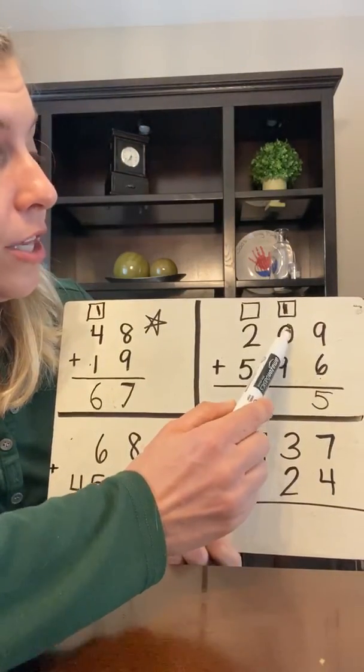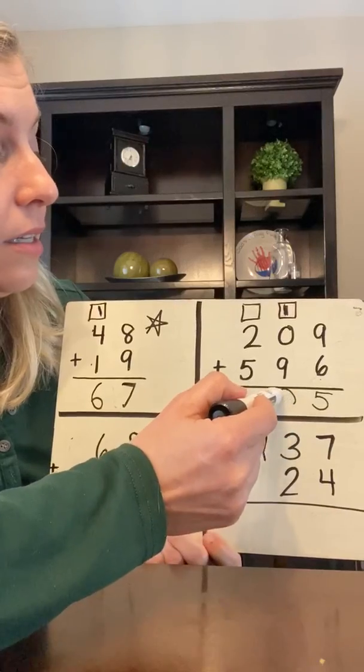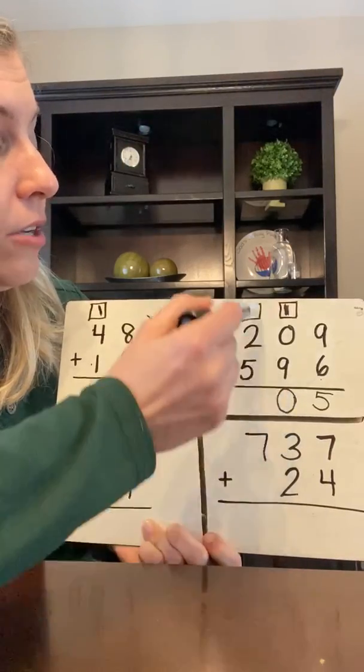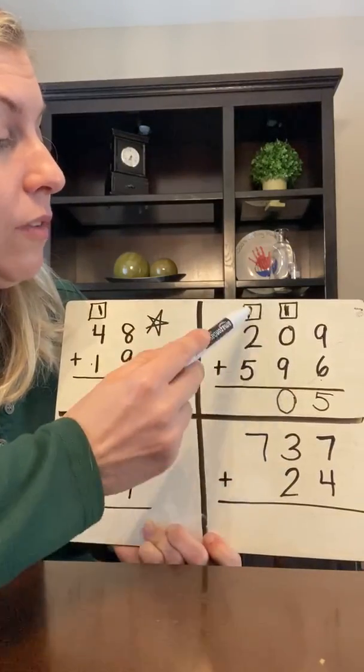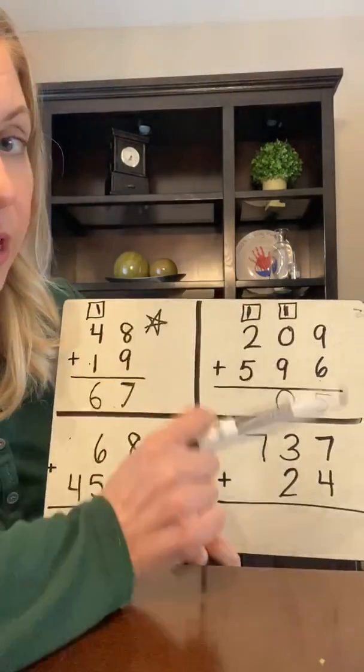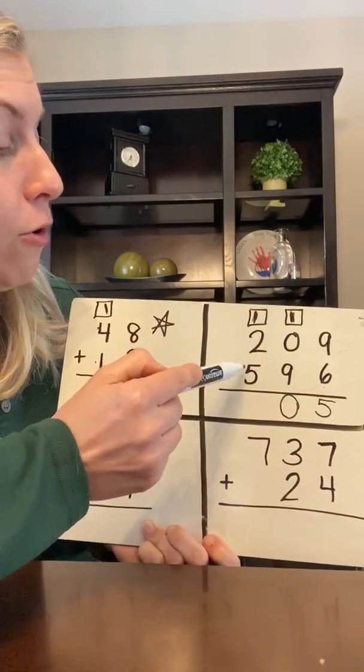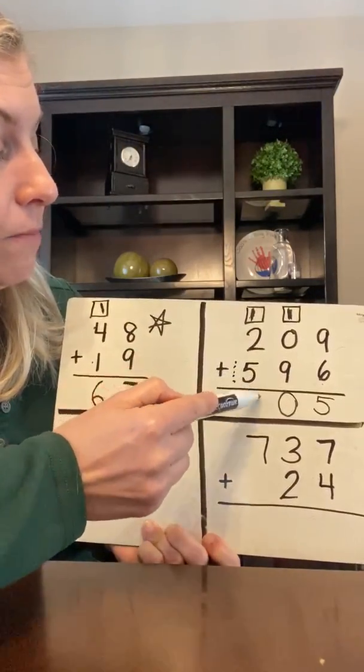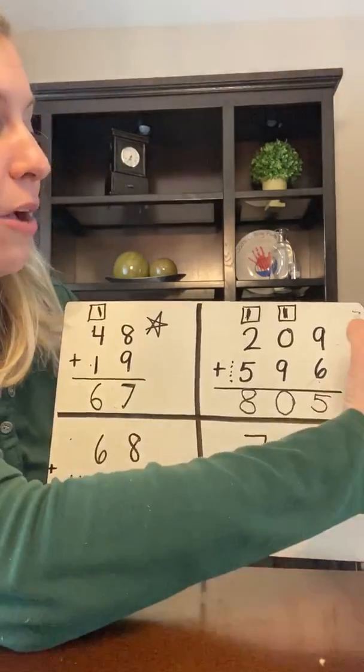One plus nothing is just one and nine more is 10. So it's a zero and a group of 100 I have to move over. I have to move it, move it. I have to move it, move it. Don't forget when you move it to count it. One plus two is three, four, five, six, seven, eight. Eight hundred and five was your answer for that one.